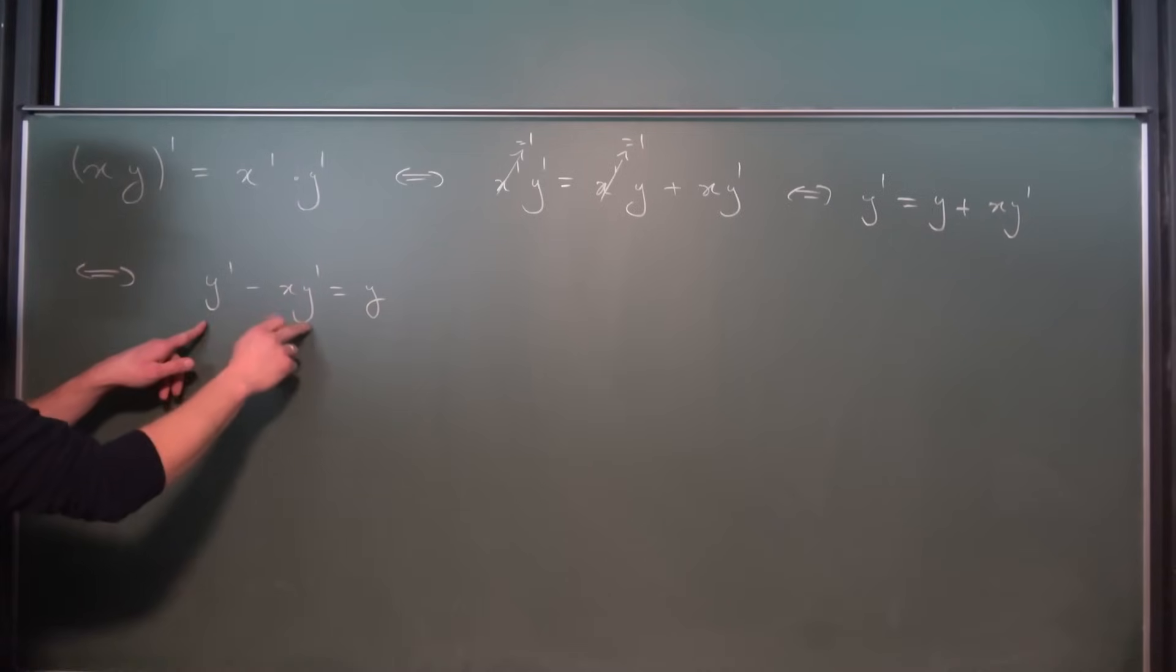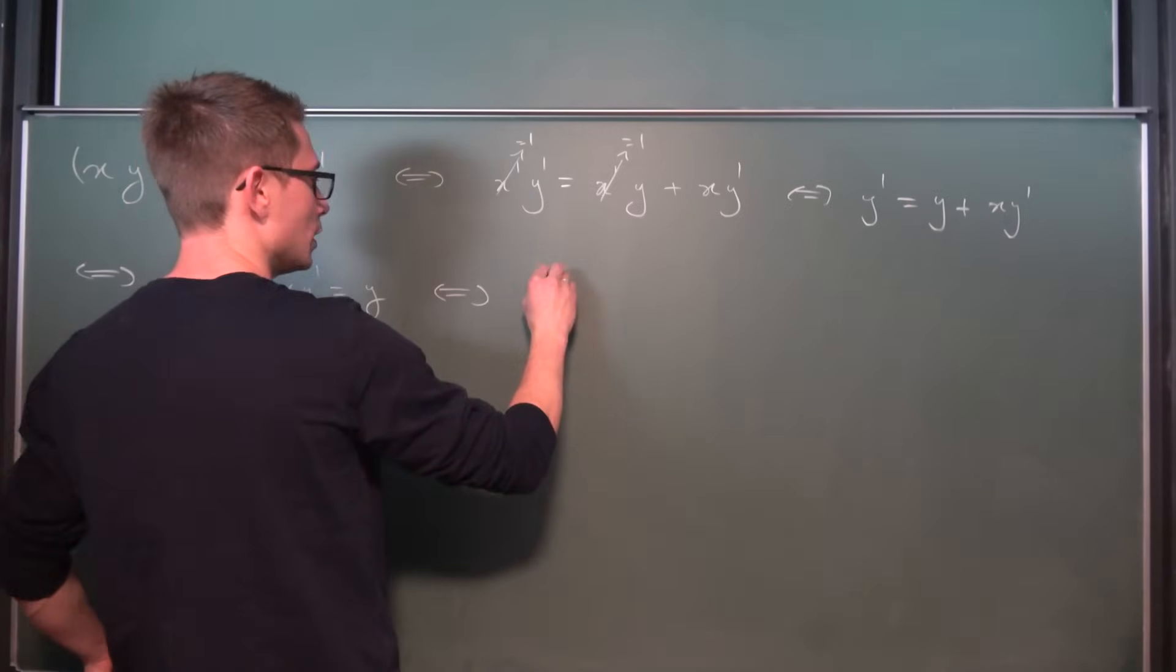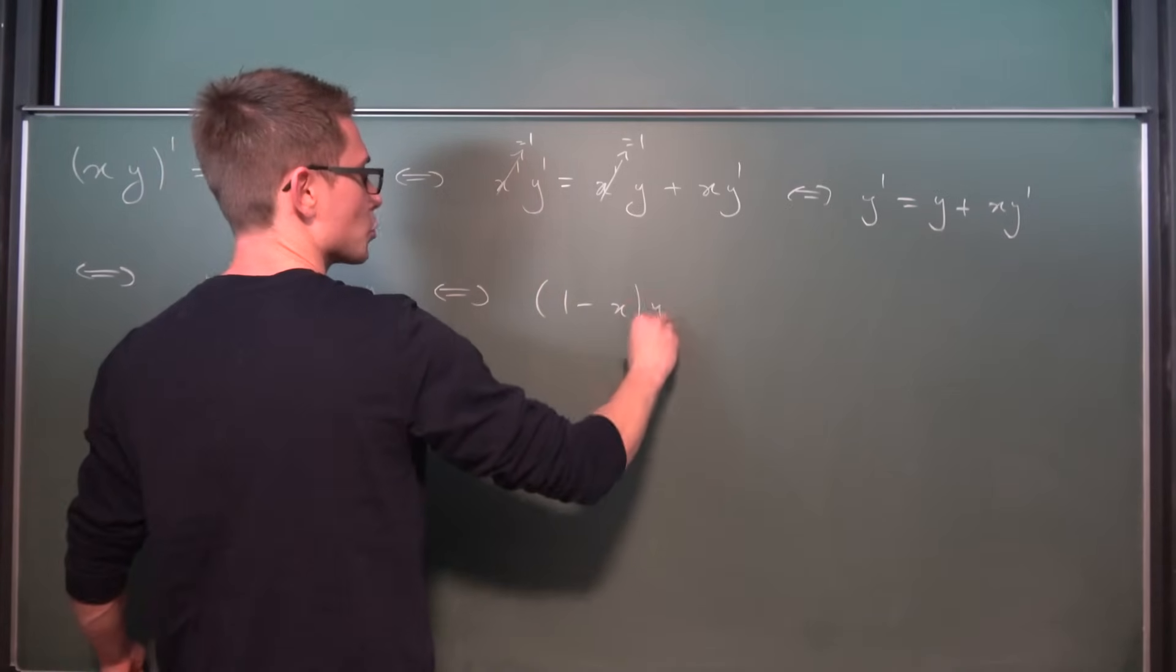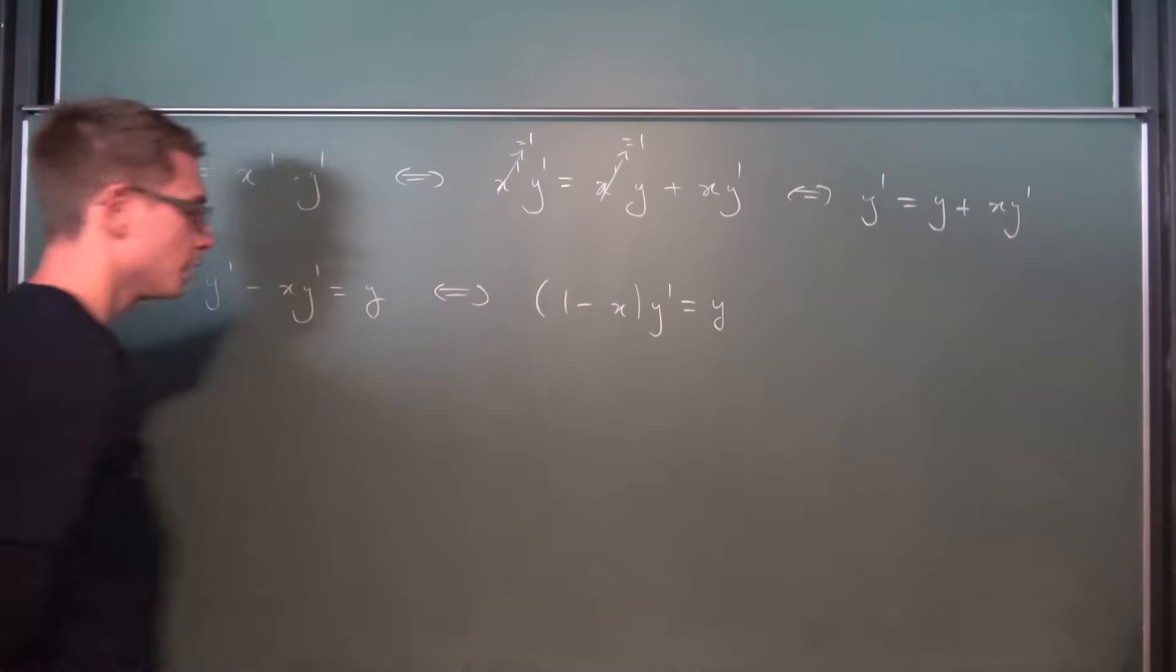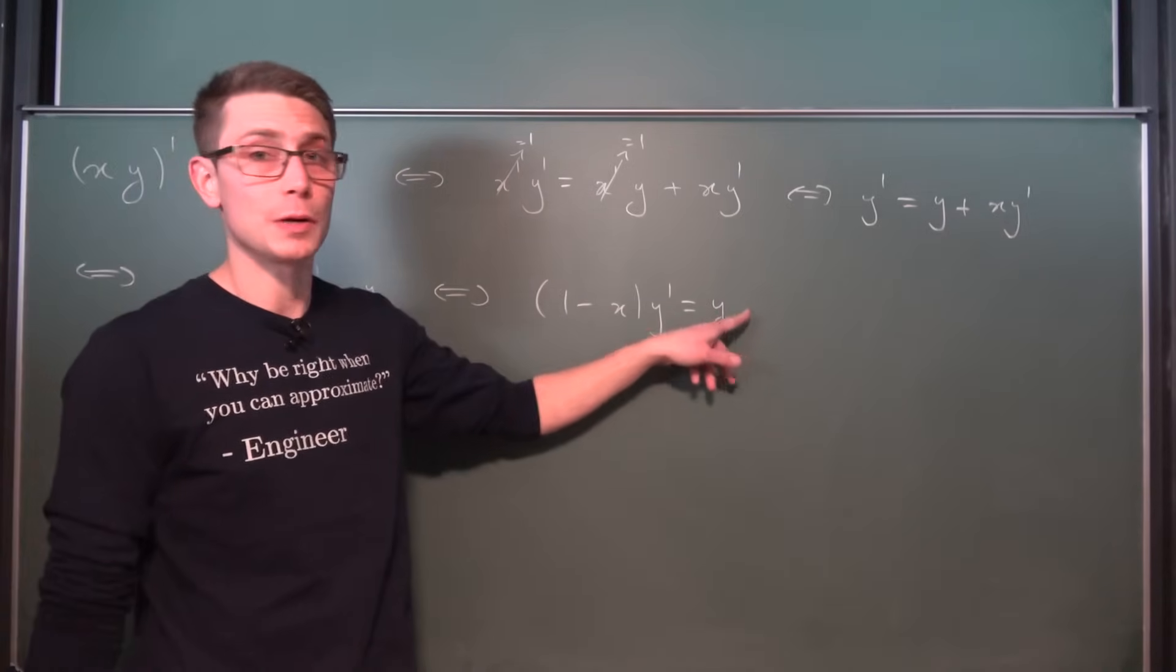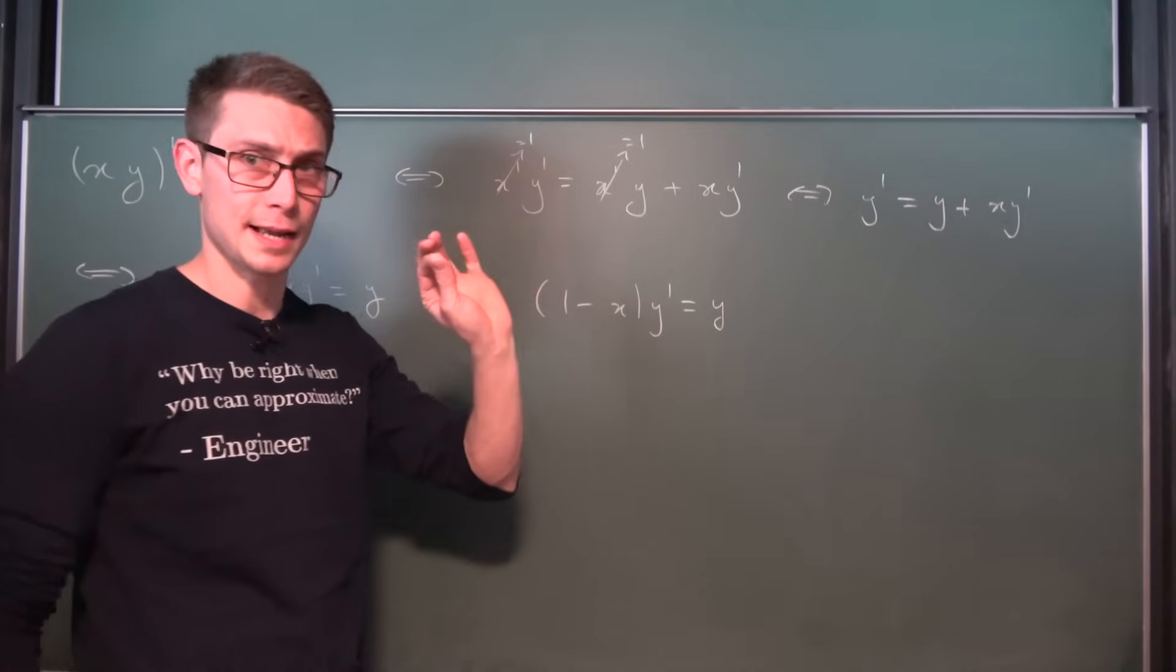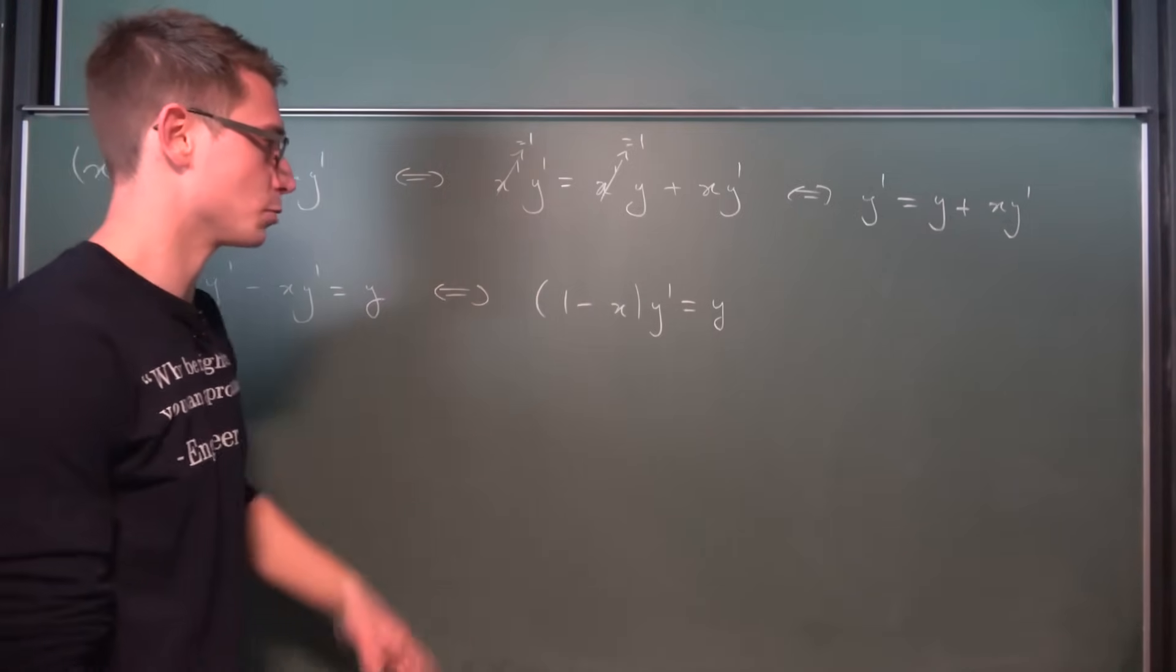Now you're going to notice that y prime is a common factor on both of those. We can factor that out, giving us overall 1 minus x times y prime is equal to y. And now we can easily separate it. We are going to divide both sides by y, divide both sides by 1 minus x under the condition that x is not identically equal to 1.